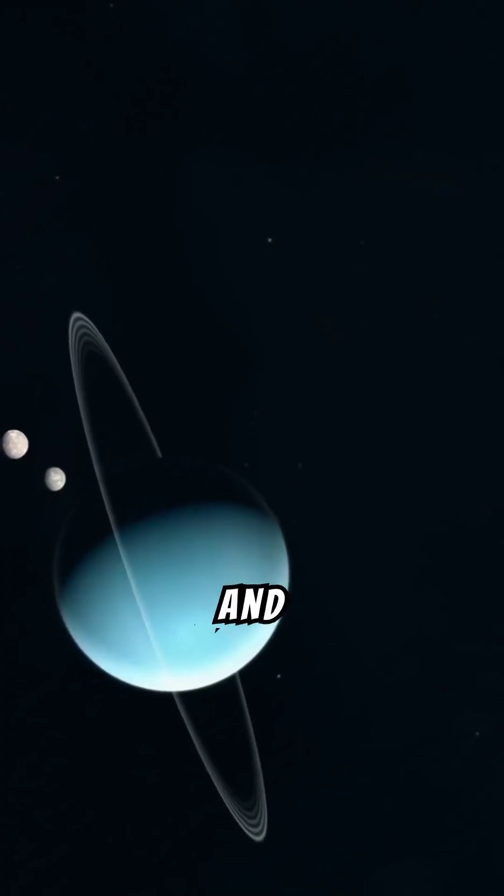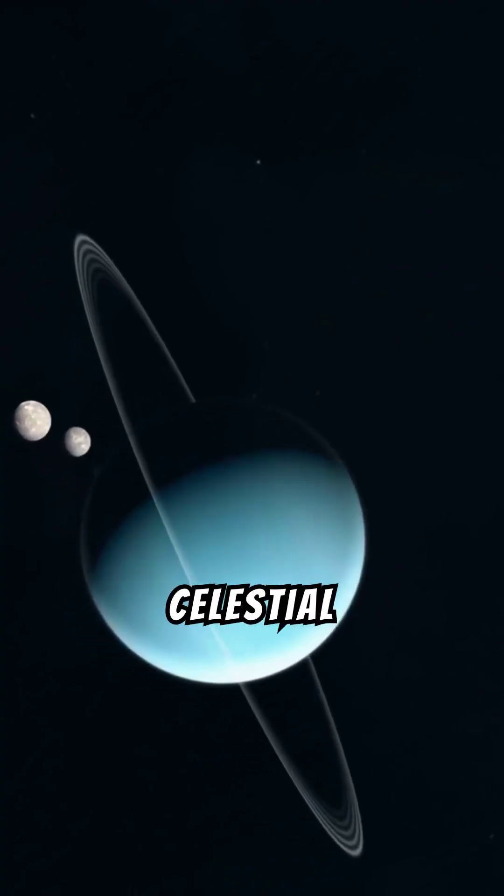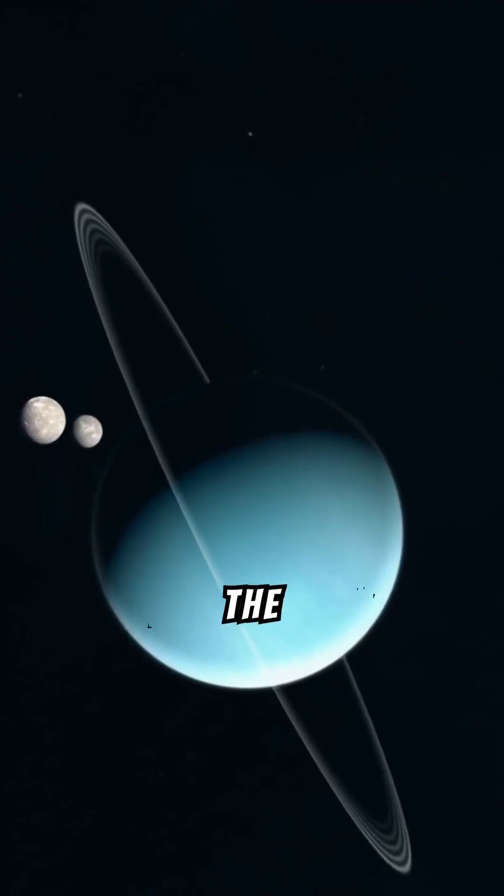With 13 known rings and 27 moons, each displaying unique characteristics, the formation of these celestial companions is intricately linked to the planet's tilt.